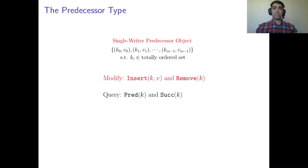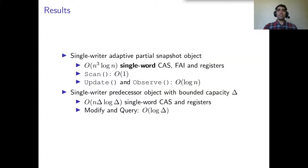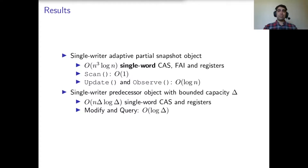We implemented a single-writer adaptive partial snapshot object using order of n-cubed log n single-word compare-and-swap, fetch-and-increment, and registers, in which the time complexity of scan is order of 1, and update and observe is order of log n. One of our main contributions is using single-word based objects in our implementations. I will explain more about this in the next slide about related works.